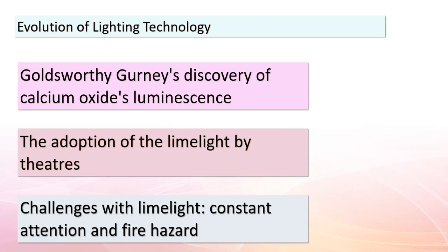Our exploration continues as we delve deeper into the evolution of lighting technology. While Goldsworthy Gurney's discovery of calcium oxide's luminescence was a brilliant innovation, the limelight had its downsides — the need for constant attention and the risk of fires made it a challenging choice. In 1879, Thomas Edison revolutionized the way we illuminate our world by introducing electric lighting, offering advantages that were safer, more convenient, and more efficient. This transition showcases the remarkable progress we've made in harnessing energy and technology to improve our lives.